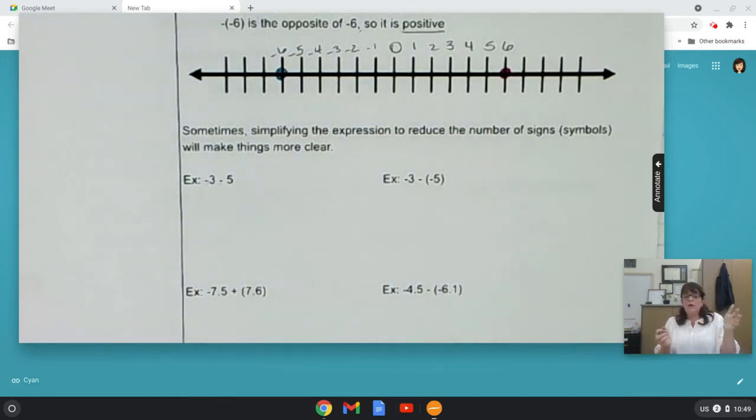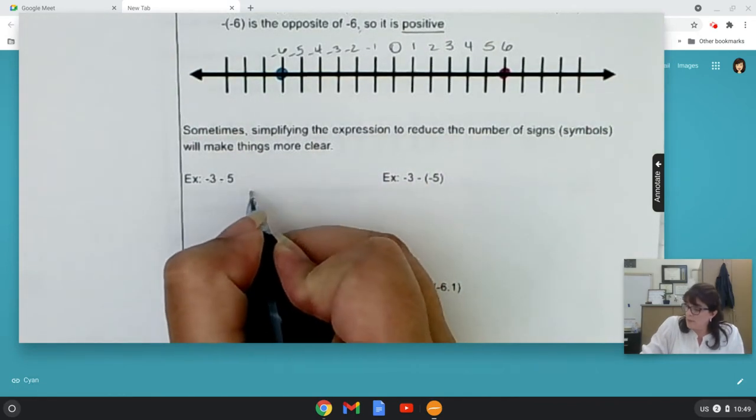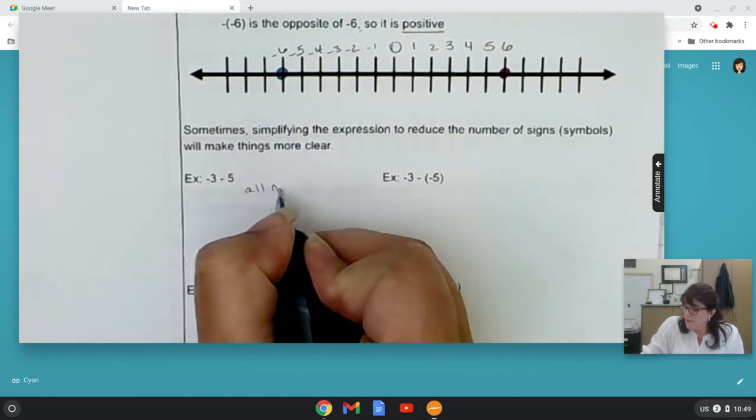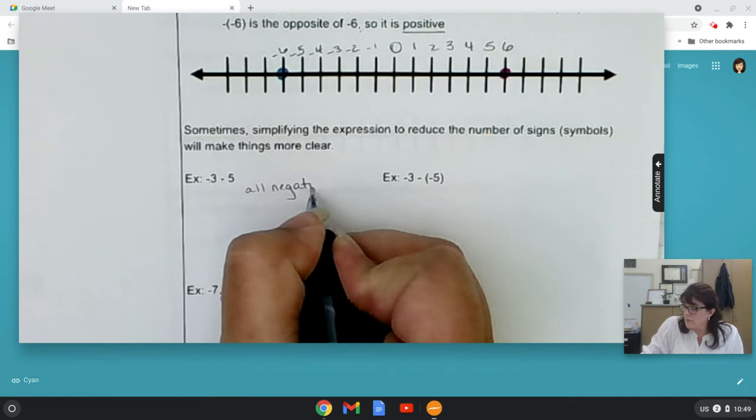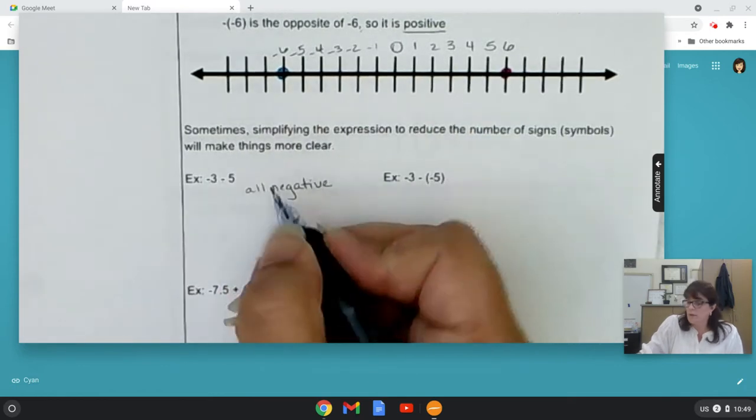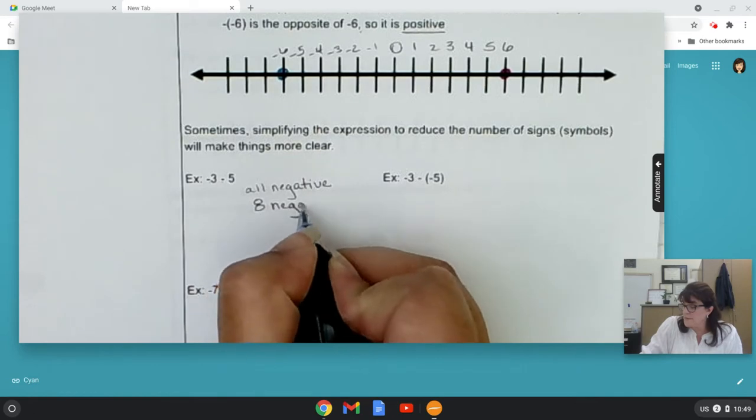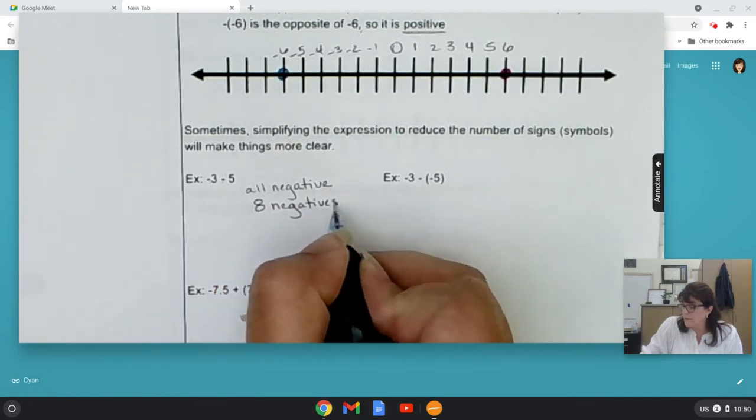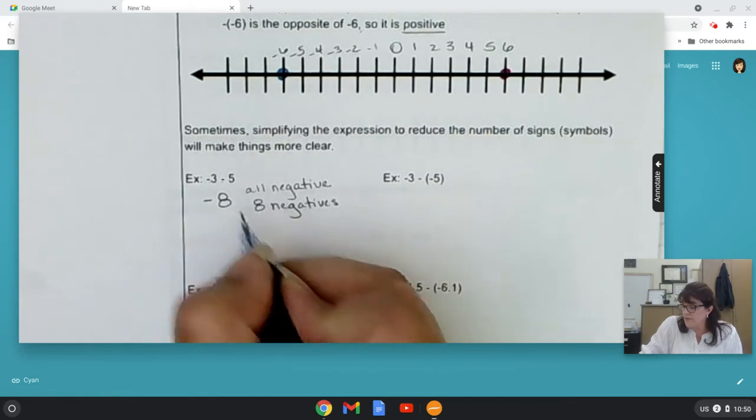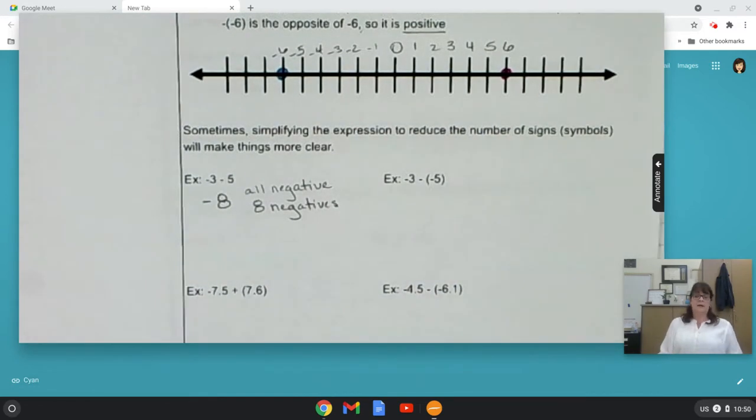Well, if I owe my sister three dollars and my brother five dollars, they're all negative. There are eight negatives. So, the value is negative eight. That's how much money I owe.